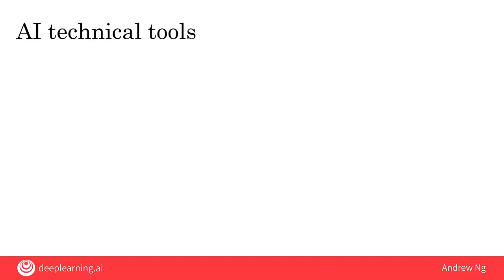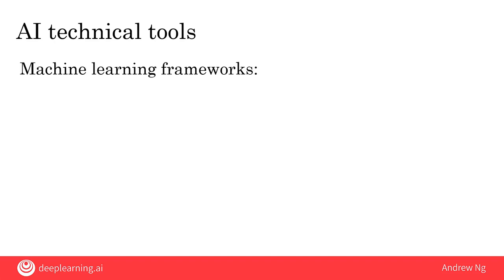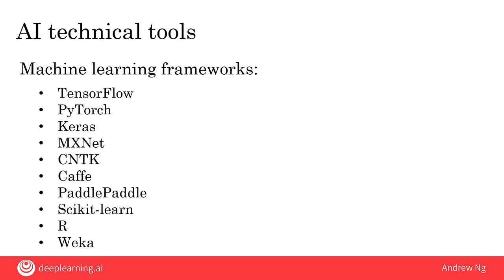We're fortunate that the AI world today is very open and many teams will openly share ideas with each other. There are great machine learning open source frameworks that many teams will use to build their systems. So if you hear of any of these — TensorFlow, PyTorch, Keras, MXNet, CNTK, Caffe, PaddlePaddle, Scikit-Learn, R, or Weka — all of these are open source machine learning frameworks that help AI teams be much more efficient in terms of writing software.